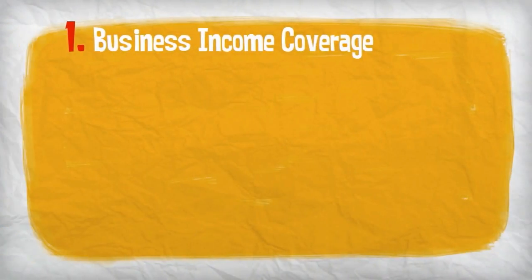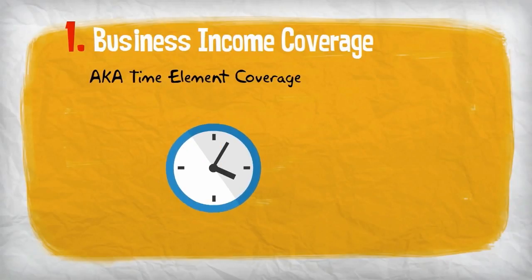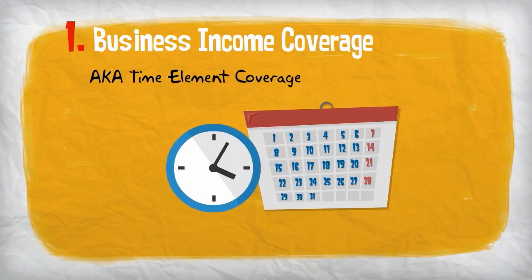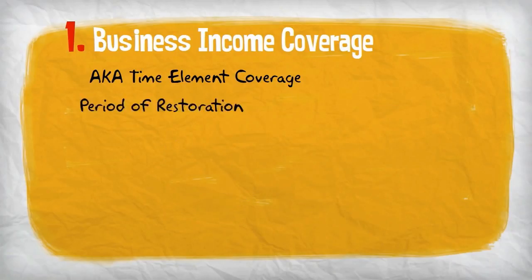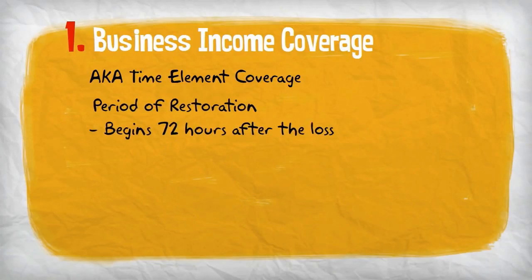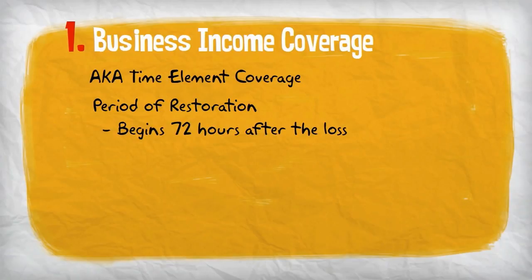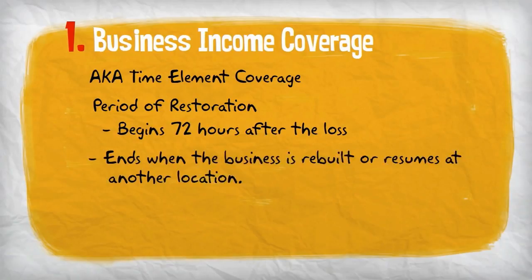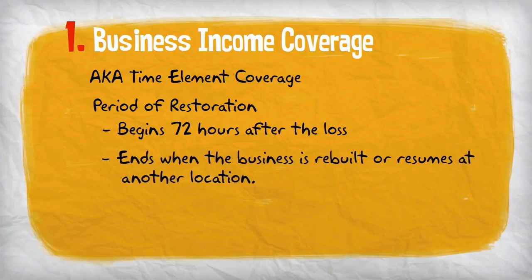Business income coverage is sometimes called time element coverage because it provides coverage for loss of business income over a specific time span called the period of restoration. The period of restoration begins 72 hours after the loss and ends when either the business is rebuilt or resumes at another location.